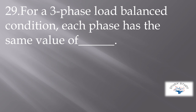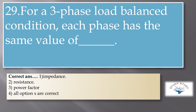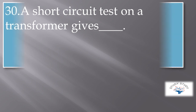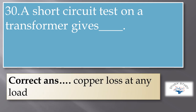For a three-phase load under balanced condition, each phase has the same value of impedance, resistance, and power factor — all options are correct. In balanced condition, impedance, resistance, and power factor have the same value for each phase. A short circuit test on a transformer gives copper loss at any load.